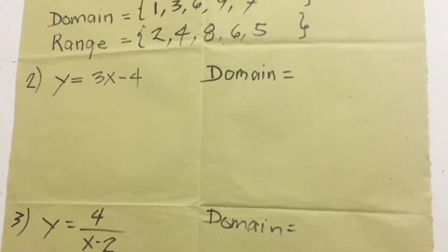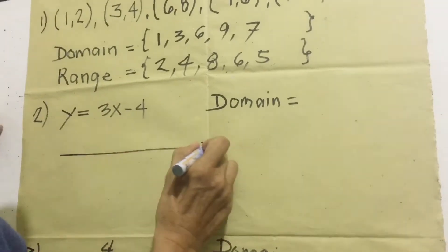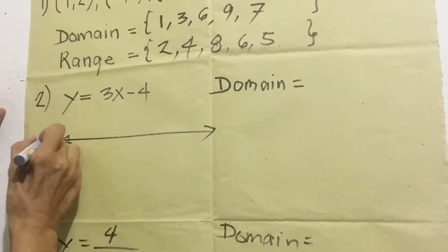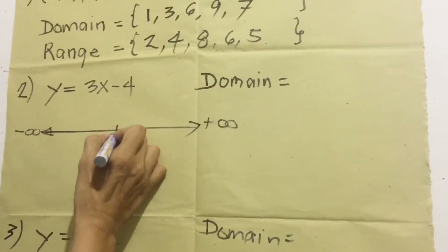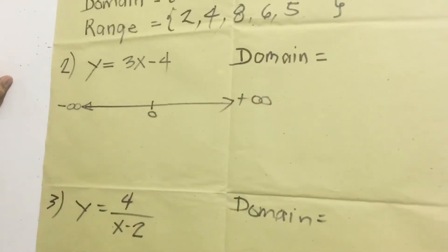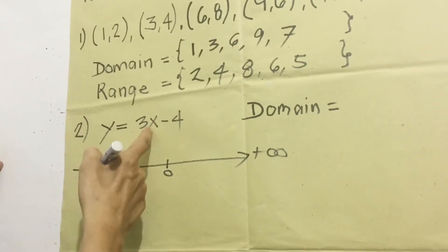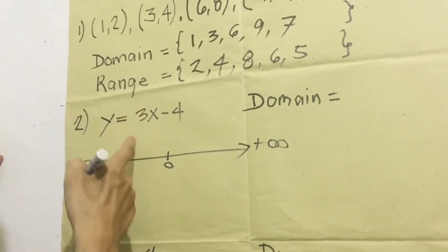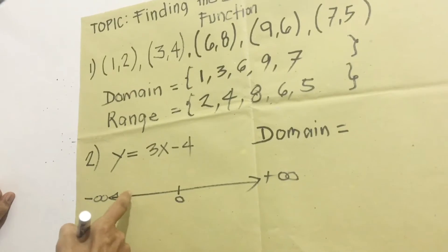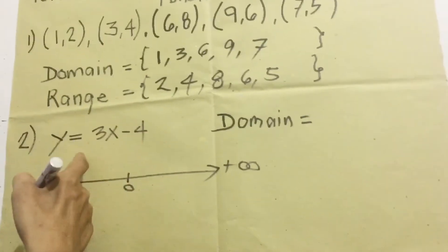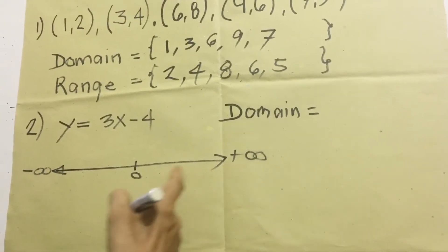Now let's answer the second problem. The given function is y equals 3x minus 4. What is the domain? If we make a number line, this side is negative infinity and this side is positive infinity. Going to the left is negative, going to the right is positive. If we pick any number here, there is no problem, so any number can be substituted for x.